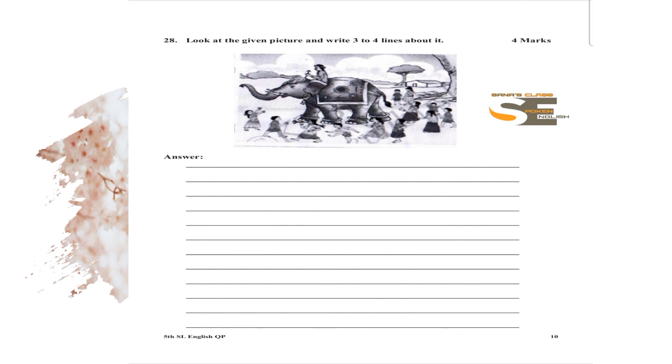Question 28: Look at the given picture and write three to four lines about it. You can see an elephant in the picture with children behind it and a person riding it. Sample: 'In this picture I could see a sage has brought an elephant to a town where children are happy to see the arrival of the animal. They are running behind the animal and trying to talk to it. Some are dancing with happiness and some are just playing with friends. They welcome the elephant with dance and happy faces.'